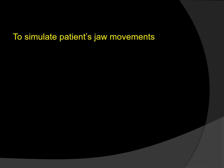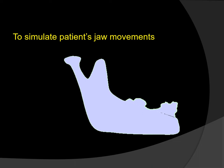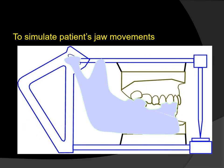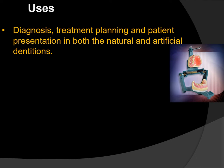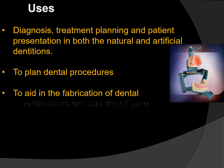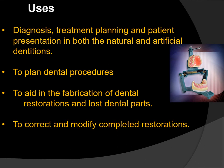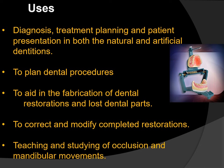The main task of an articulator is to provide a frame where it is possible to relate in three planes of space the maxillary cast with the mandibular cast in relation to the hinge axis of the patient and of the instrument — that is, to simulate the patient's jaw movements. Other uses include diagnosis, treatment planning, and patient presentation in both natural as well as artificial dentitions; planning dental procedures based on the relationship between opposing natural and artificial teeth; aiding in fabrication of dental restorations and lost dental parts; correcting and modifying completed restorations like occlusal corrections; and teaching and studying occlusion and mandibular movements.